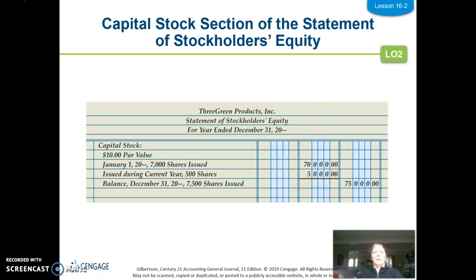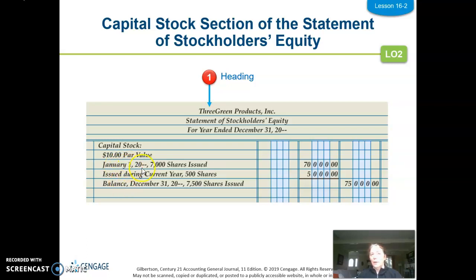Let's look at the capital stock portion of the statement. First we've got to do the heading — who, what, when. Who is the company name; the what is 'Statement of Stockholders' Equity'; and it is 'For the Year Ended' because we're showing all the activity to get to the end of the year. The first section is capital stock, with a colon, and we list the par value — MindTap typically does that for you. We show the activity from beginning to end, so on January 1st we have how many shares had been issued to shareholders: 7,000 shares.